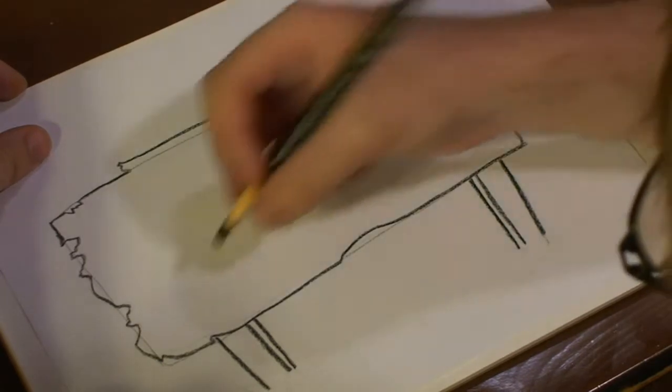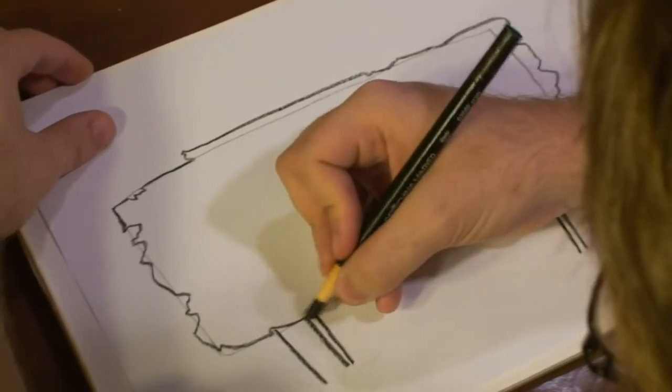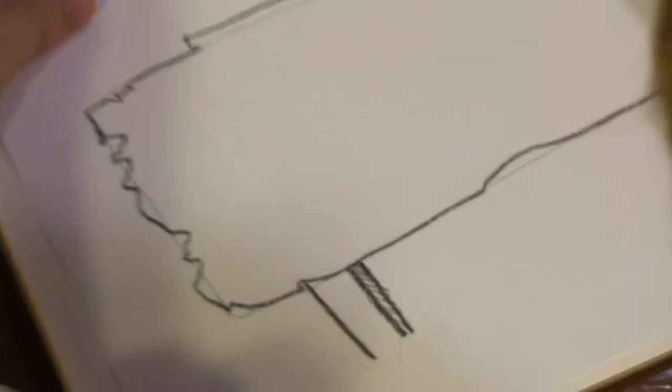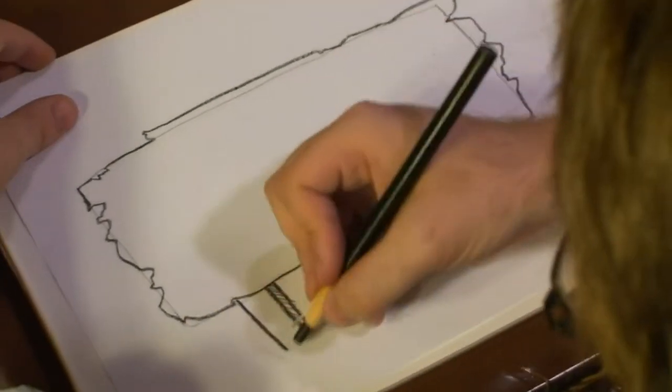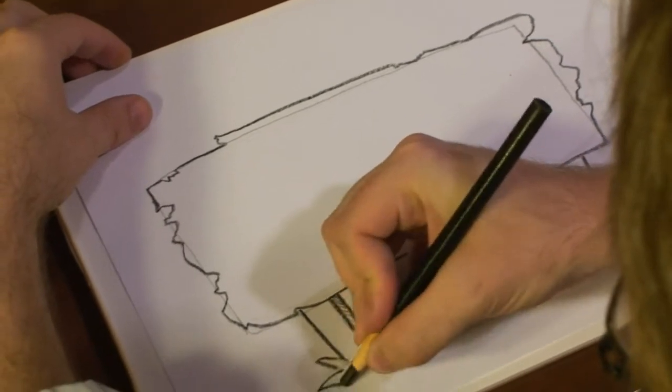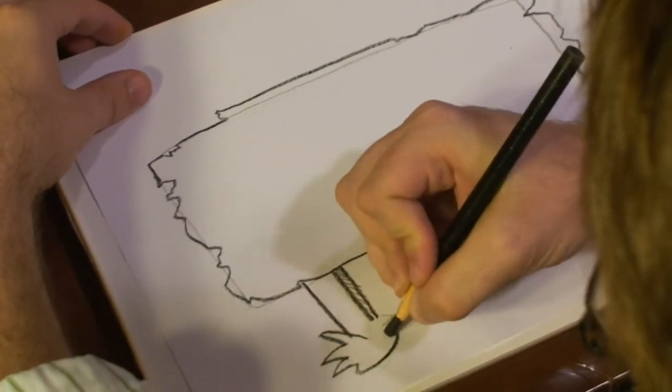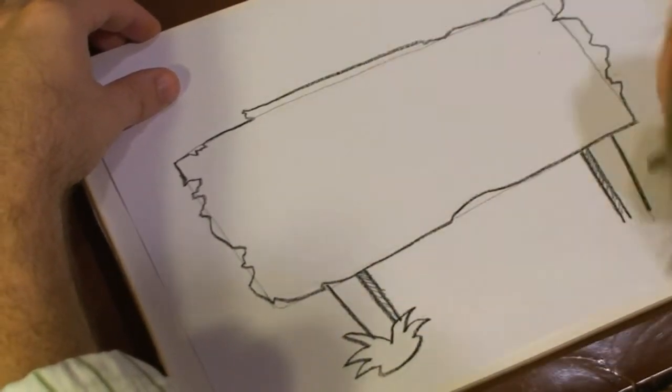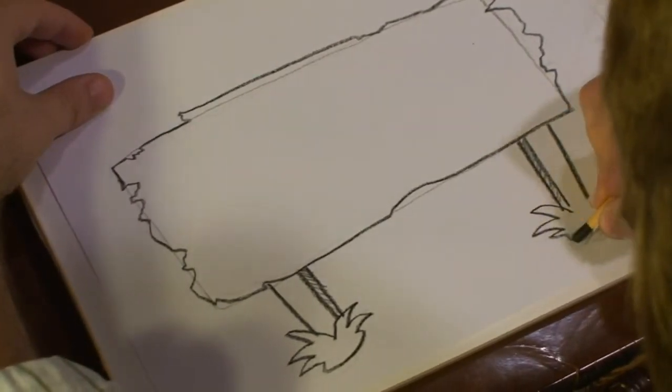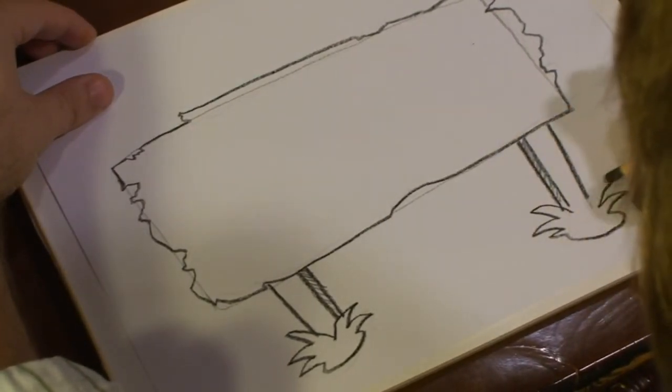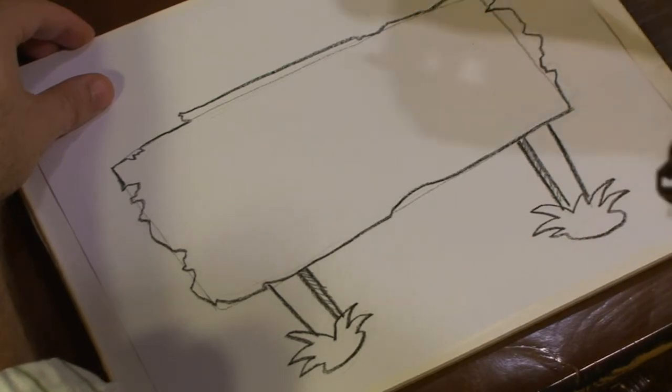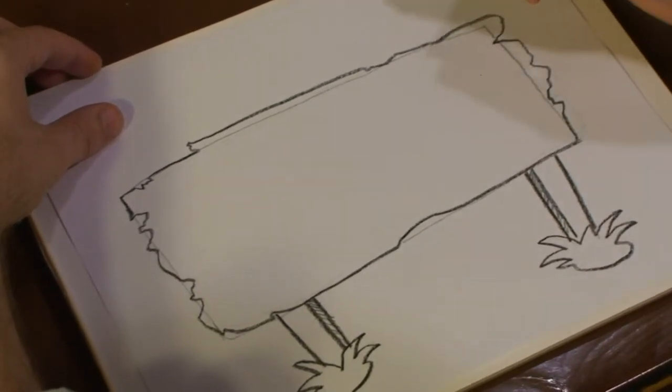Now we've got that. Darken out some areas. Darken there. And then I'm going to add some grass. Now that's starting to look like a weathered sign.